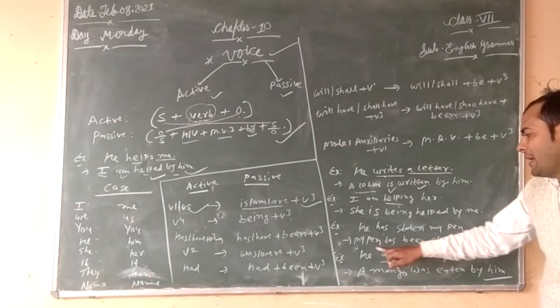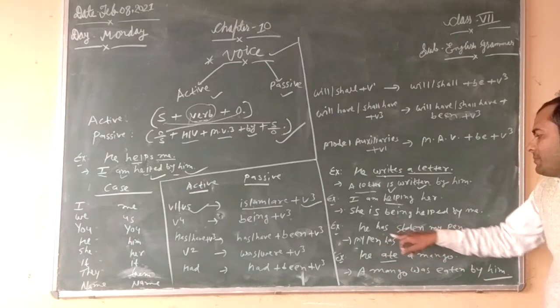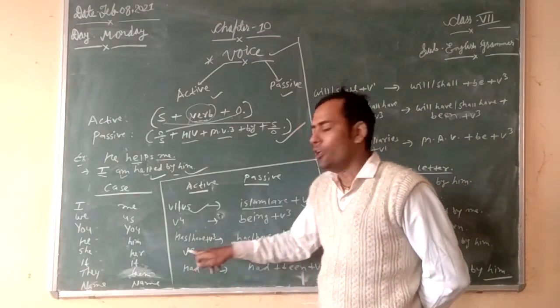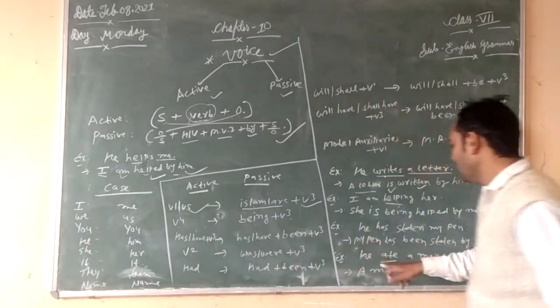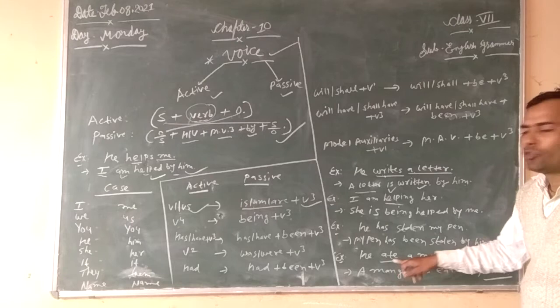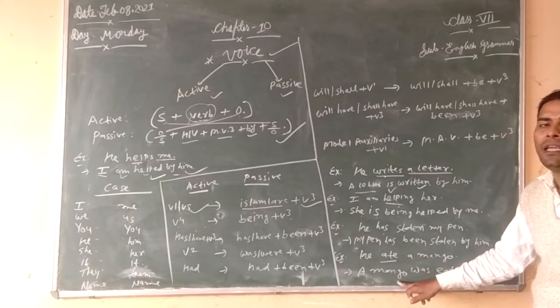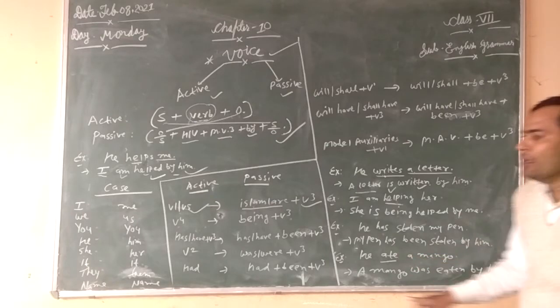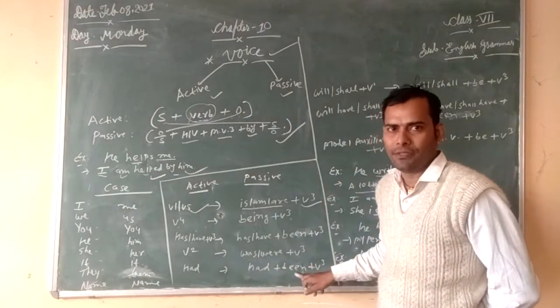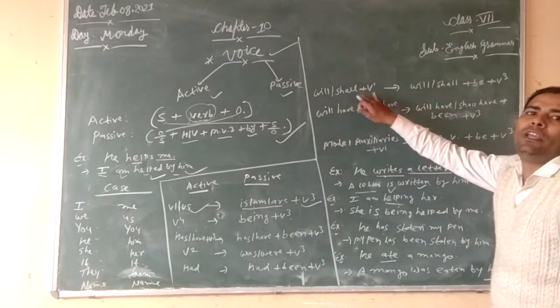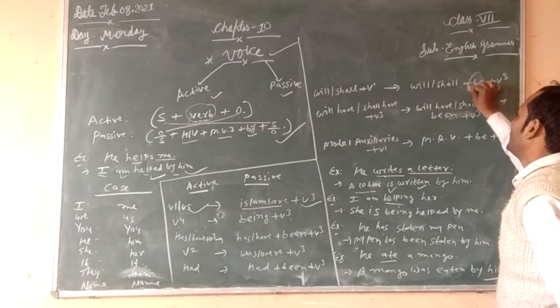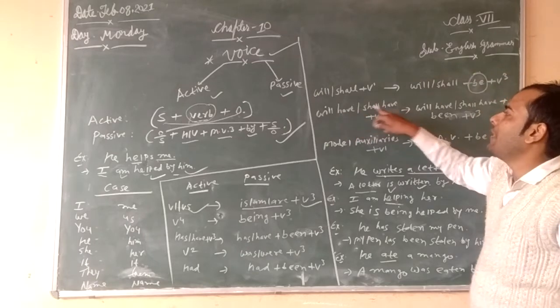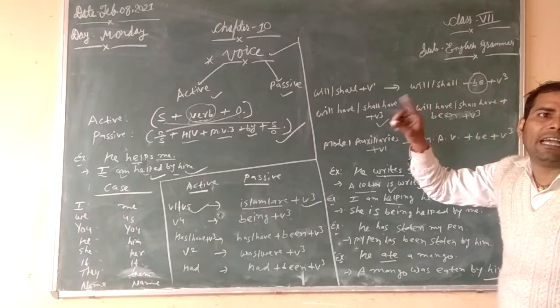My pen has been stolen. You will be helped by me. We have verb 3 here in these passive voice examples.